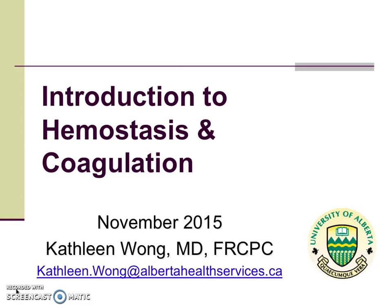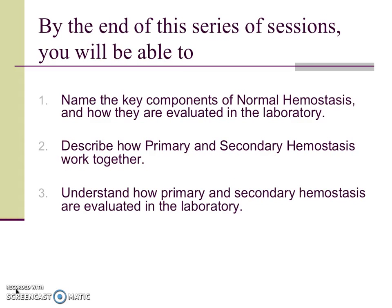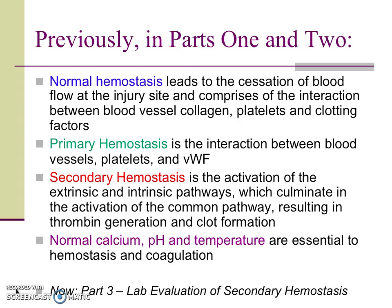This slide outlines the three primary objectives of this series of sessions. Previously, in Part 1, we defined normal hemostasis and described primary hemostasis as the interaction between the blood vessel's subendothelial collagen layer, platelets, and von Willebrand factor. In Part 2, we explored how secondary hemostasis is triggered by tissue injury that activates the extrinsic pathway and common pathway to generate an initial burst of thrombin, which then activates the intrinsic pathway to propagate additional thrombin generation and clot formation. We concluded Part 2 by emphasizing that normal blood calcium concentration, pH, and temperature are essential to overall hemostasis and coagulation.